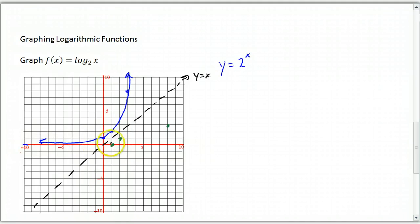And instead of having a horizontal asymptote on the X axis, I am now going to have a vertical asymptote on the Y axis. And so your graph of your logarithm is just an exponential graph that's been flipped, reflected, over the line Y equals X. So this is Y equals the log of X base 2.